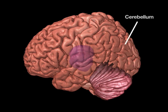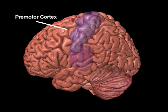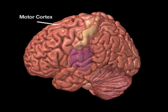Motor function is localized to very specific parts of the brain. For example, the cerebellum uses sensory information to help maintain balance and posture, while movement is controlled by the brain's motor systems. Within the motor system, there are specific regions that control gross movements, such as running. A separate region, the motor cortex, controls fine movements, such as piano playing.